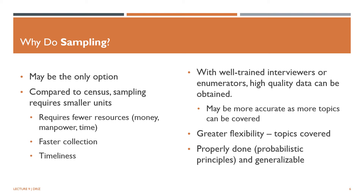If there is a long delay before the results are published, the information may be out of date. Population censuses are conducted only once in 10 years, so we are often using population census data up to 10 years old. If interviewers or enumerators are trained well, high-quality data can be obtained. More attention can be given to each unit sampled and to follow up on missing information or elaboration of data collected. More topics can be covered and in greater depth. Hence, a sample may convey more accurate data than a census. If sampling is done according to probabilistic principles, the results can be generalized. This, as indicated already, is the primary objective of sampling.